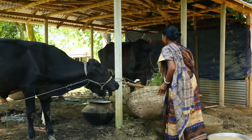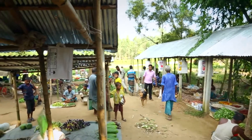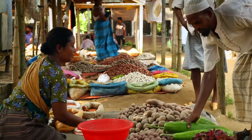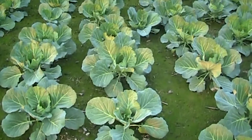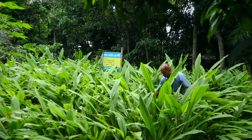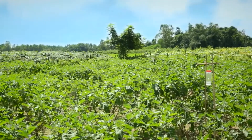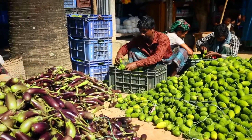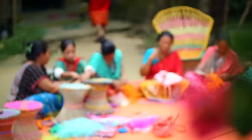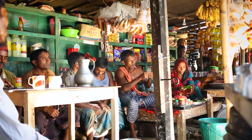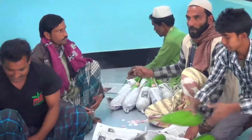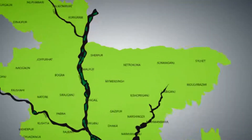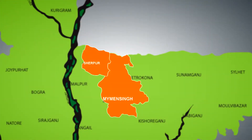The Food and Agriculture Organization of the United Nations (FAO) is one of the vibrant partners of the government of Bangladesh in the food and agriculture sector. With financial support from the government of Italy, FAO has developed the technical assistance project titled 'Food Security through Enhanced Agricultural Production, Diversified Sources of Income, Value Addition and Marketing in Bangladesh.'